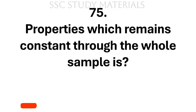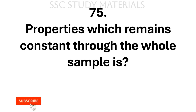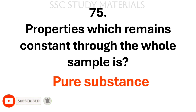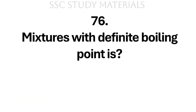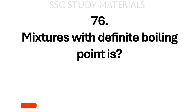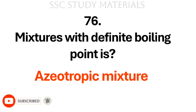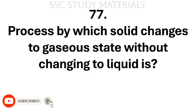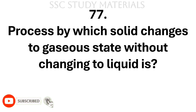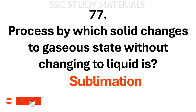Question No. 75: Properties which remain constant through the whole sample is? Answer: Pure substance. Question No. 76: Mixtures with definite boiling point are? Answer: Azeotropic mixture. Question No. 77: Process by which solid changes to gaseous state without changing to liquid is? Answer: Sublimation.